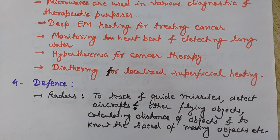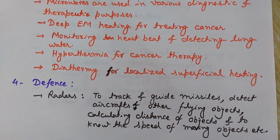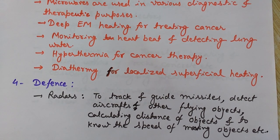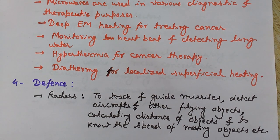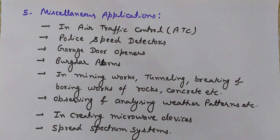Now let's discuss the applications of microwaves in the field of defense. Defense uses radars — RADAR stands for Radio Detection And Ranging. These radars use microwaves and can be used to track and guide missiles, detect aircraft and other flying objects, calculate the distance of objects situated away from us, and determine the speed of moving objects.